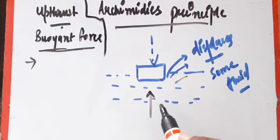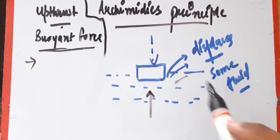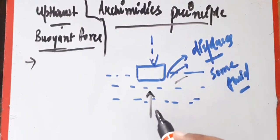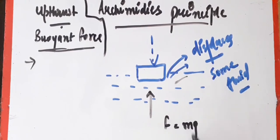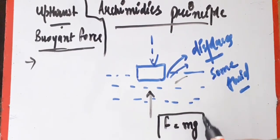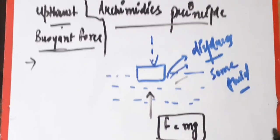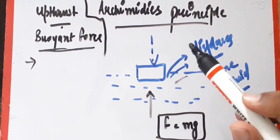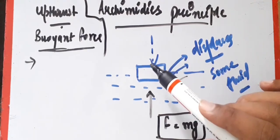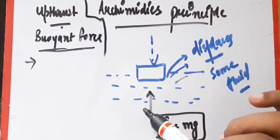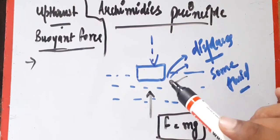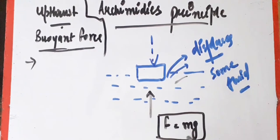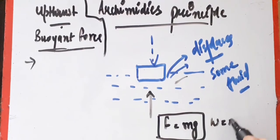If you want to calculate how much fluid is displaced, you can calculate it using the buoyant force. We can say F = mg, which is equal to the mass of the displaced fluid multiplied by gravity. We can also write the equation W = mg, because it represents the weight of the fluid displaced.